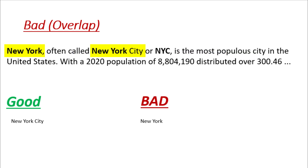You will choose the bad overlap option when two of the same words occur, and one is more specific, concise, and complete while the other is not. In this case there are two similar phrases: 'New York' and 'New York City'. New York City is more specific and complete, so we will choose it as good, and the plain 'New York' we will choose as bad overlap.